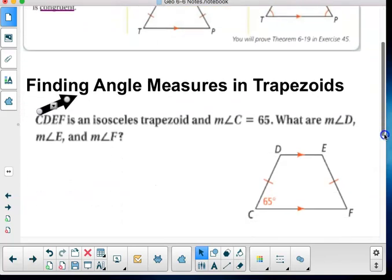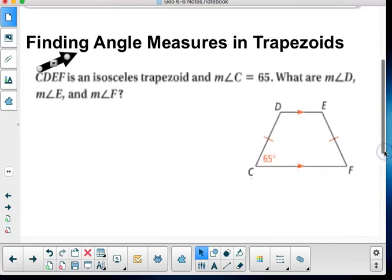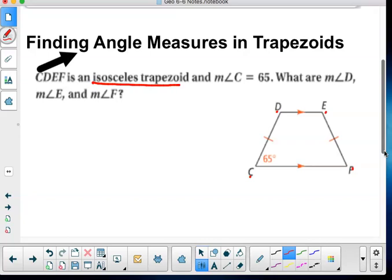Now, because of that, we can find the measures of these angles. CDEF is an isosceles trapezoid with measure of angle C equal to 65. What are the measures of angle D, angle E, and angle F?